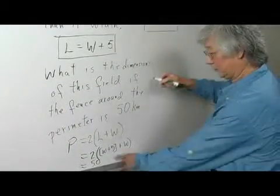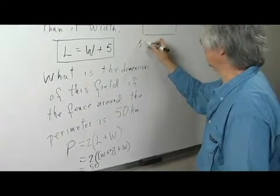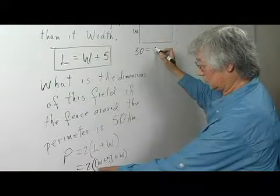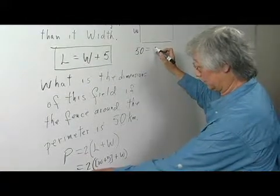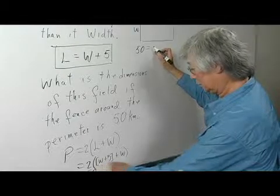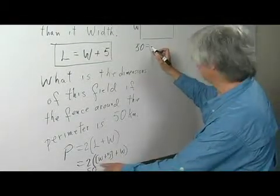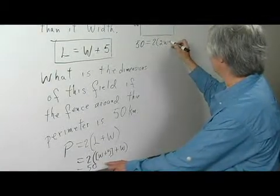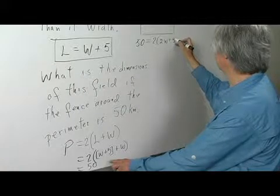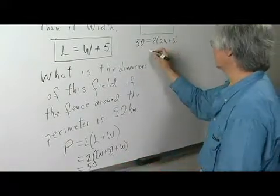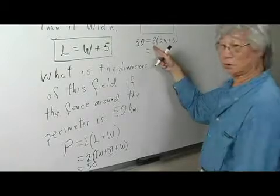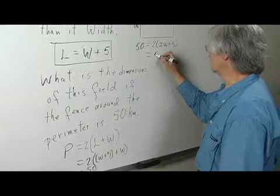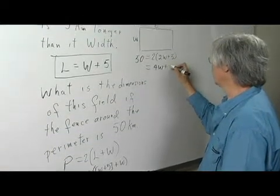I'm going to move over here now. 50 equals — I'm going to simplify and expand this. W plus W gives me 2W, so it's going to be 2 times 2W plus 5. I'm going to further expand this using the distributive law of multiplication. So this becomes 4W plus 10.